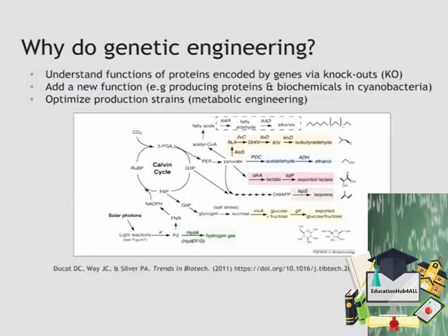Why in general are we doing genetic engineering in cyanobacteria? First, as scientists, we want to understand how proteins function in the cell, so we often do that by knocking out a protein and asking how the phenotype of the cell changes. We can also add new functions for engineering purposes to produce novel proteins or biochemicals, and we can engineer cells further to optimize production strains through metabolic engineering, which will be discussed in a future lecture.